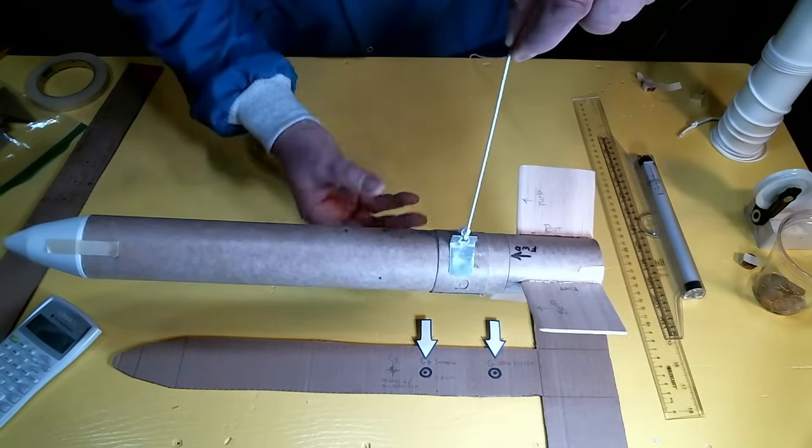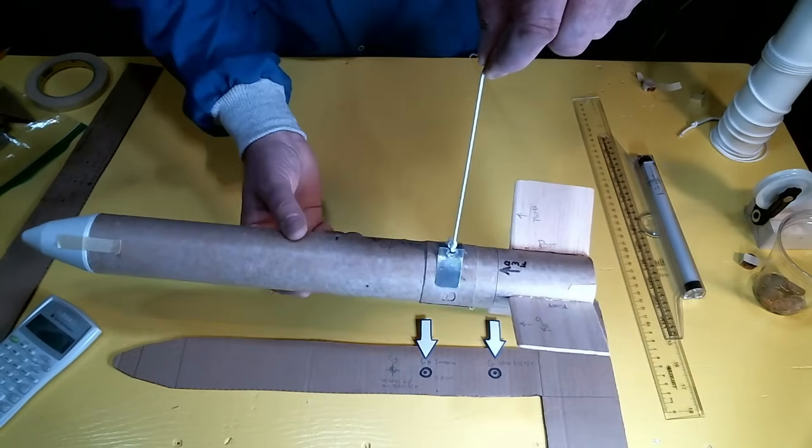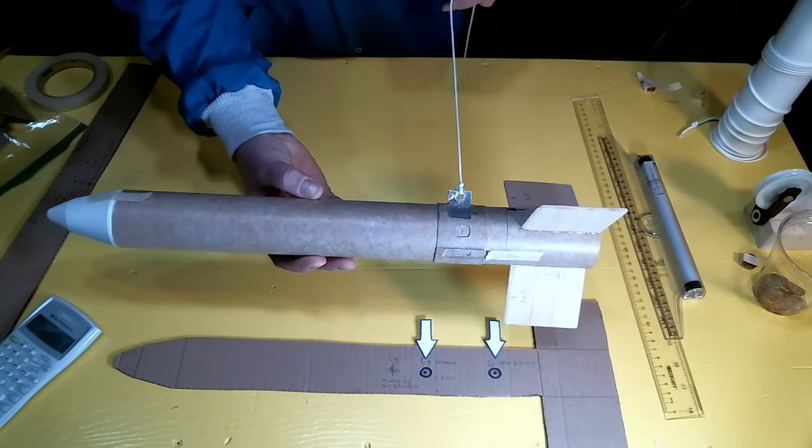Here's the final balance configuration. I've moved the center of gravity about one half inch forward. So let's go outside and see what the spin test tells us.